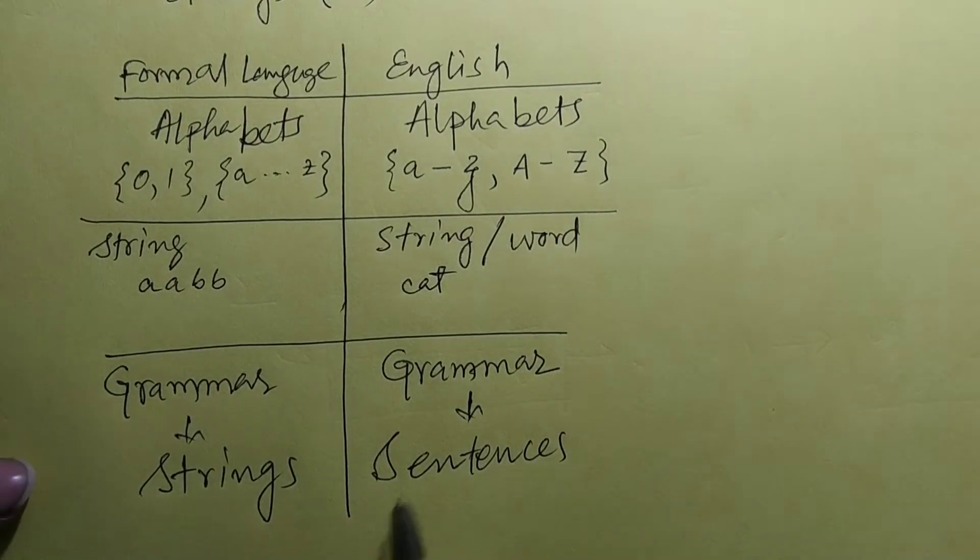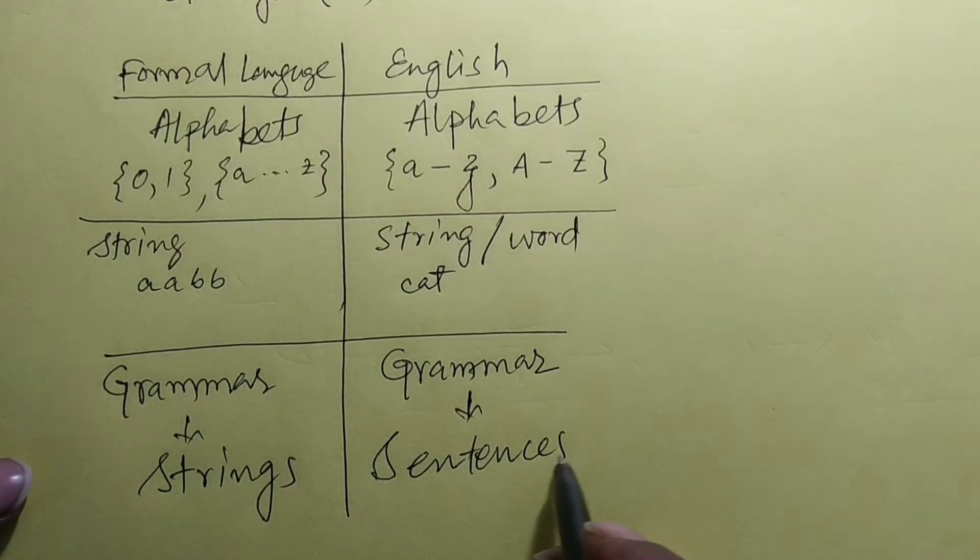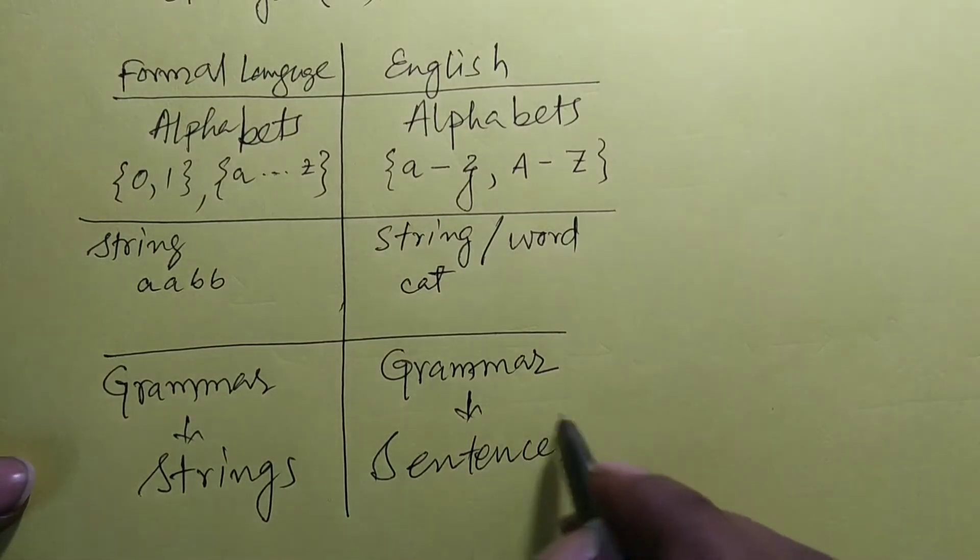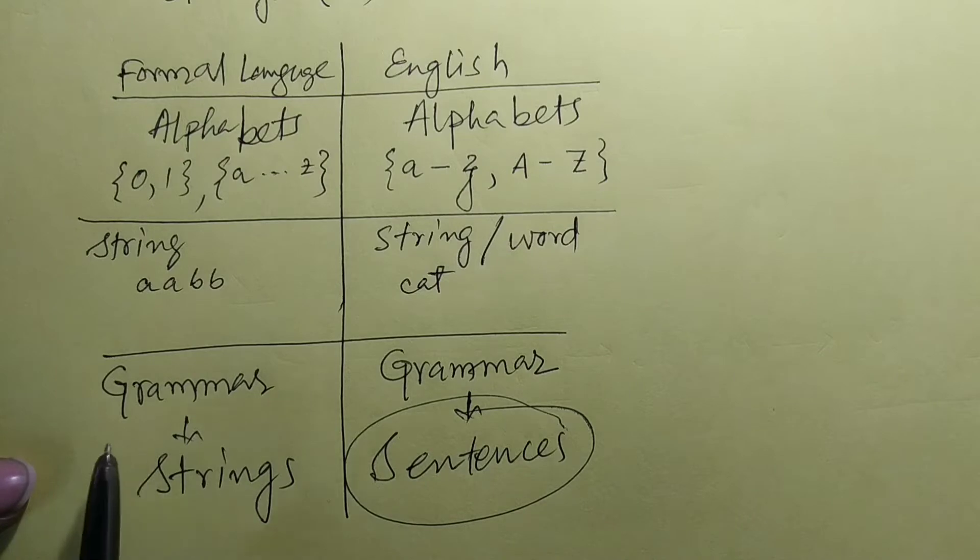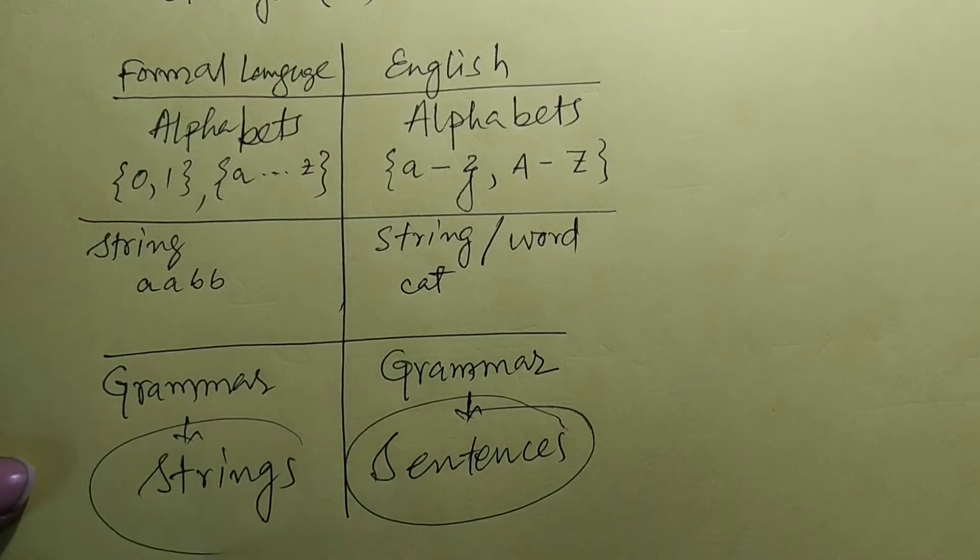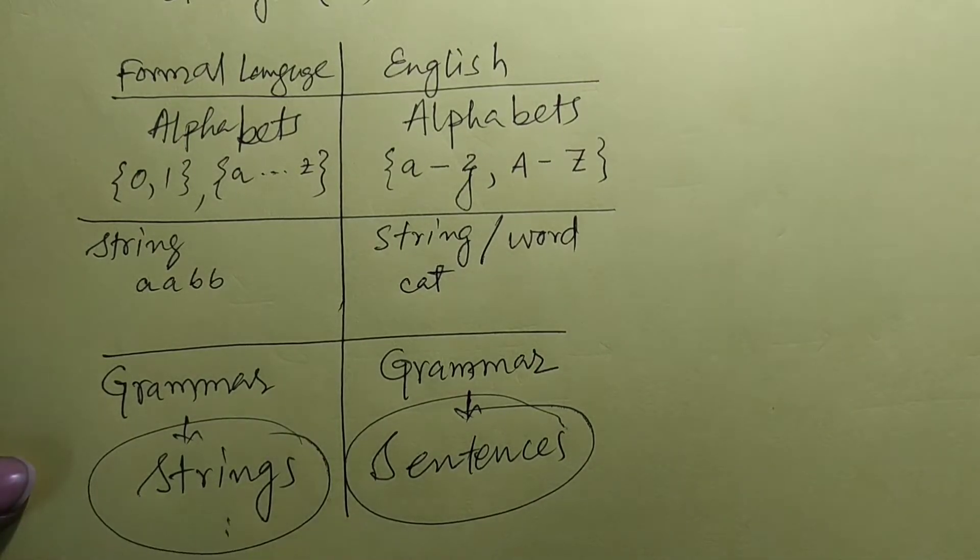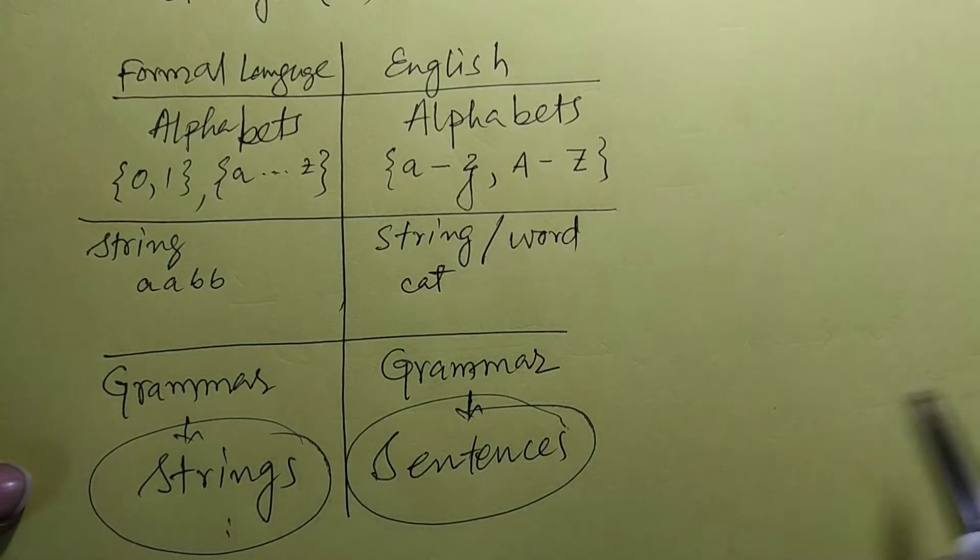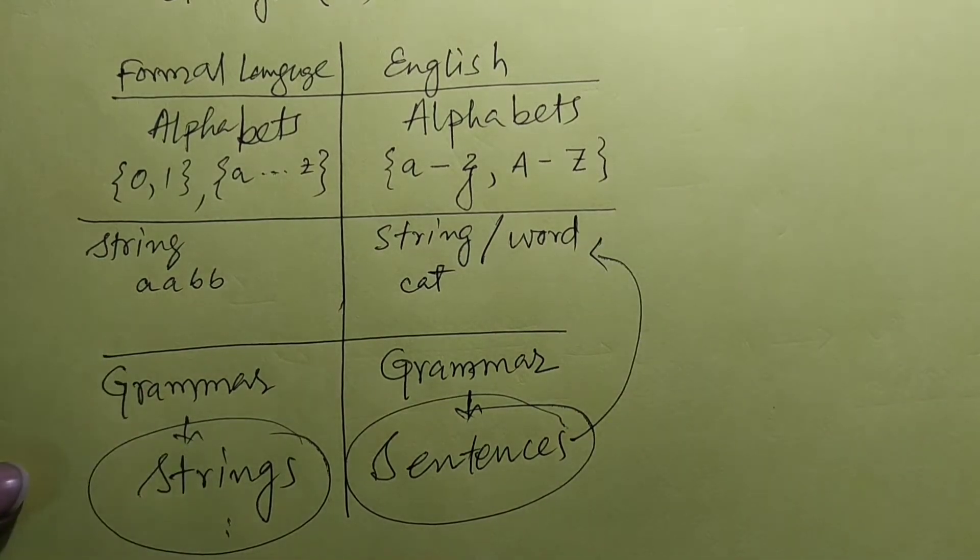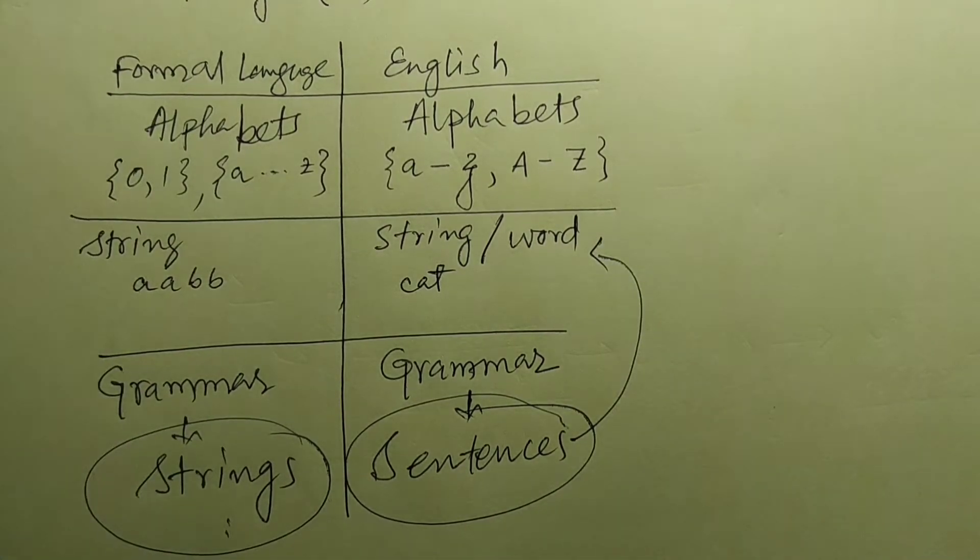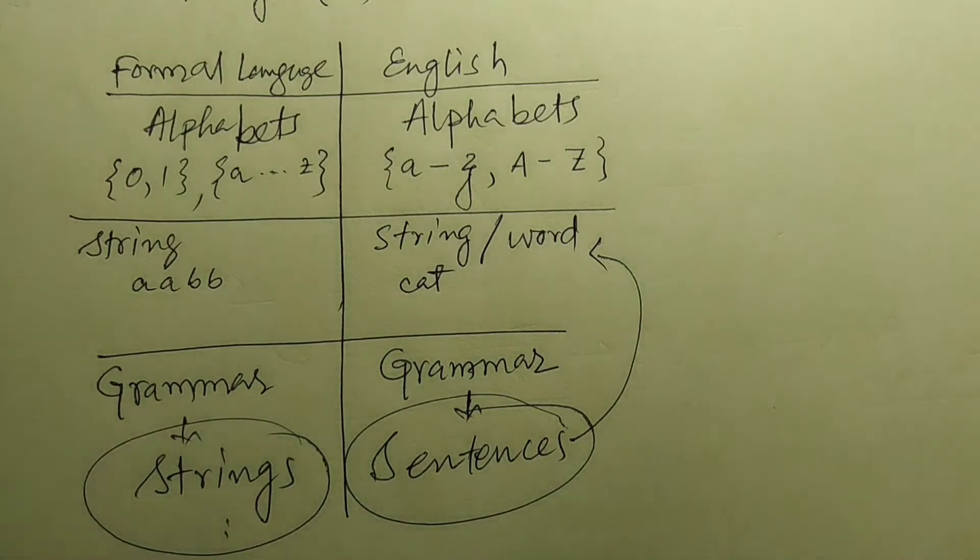Right, so at this point we have to map the thing that in English what you call as sentence, here in formal language we will call it as string, because strings are generated by grammars. So this sentence and this word are going to be equivalent in case of formal language and automata.